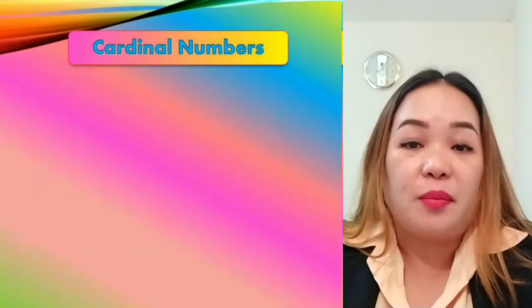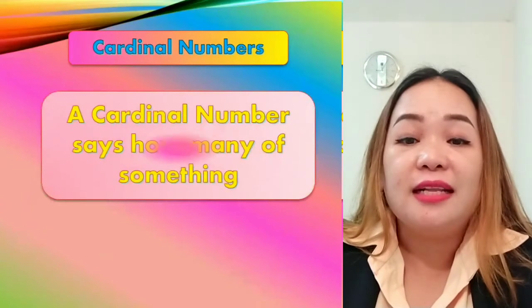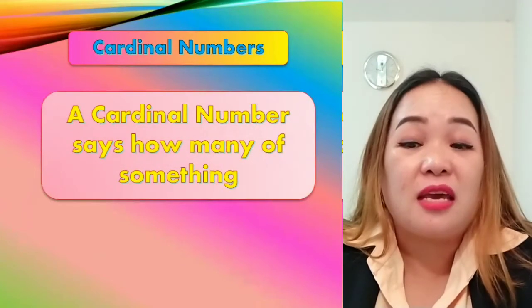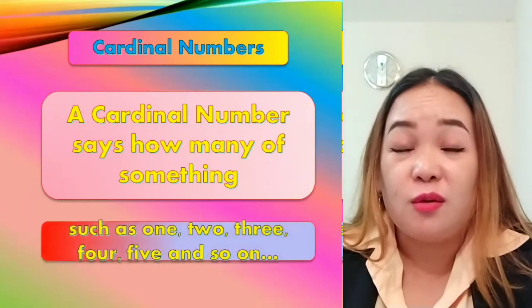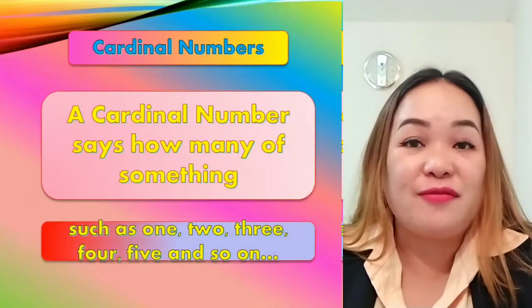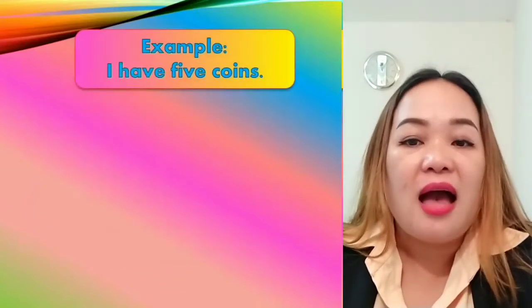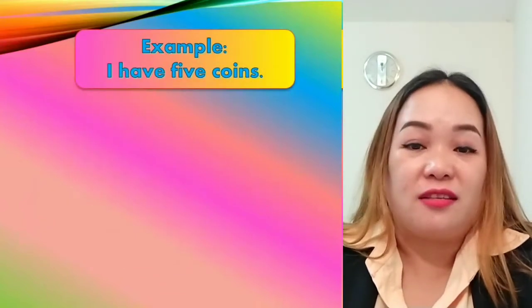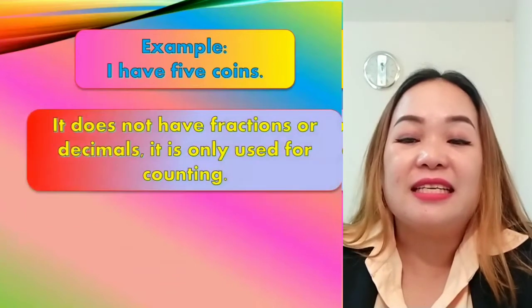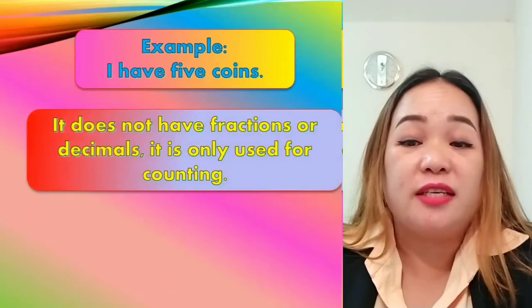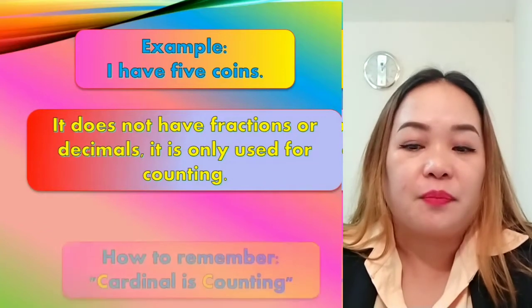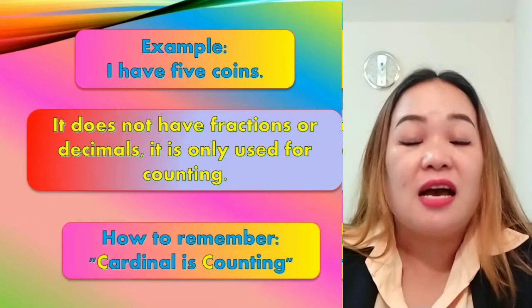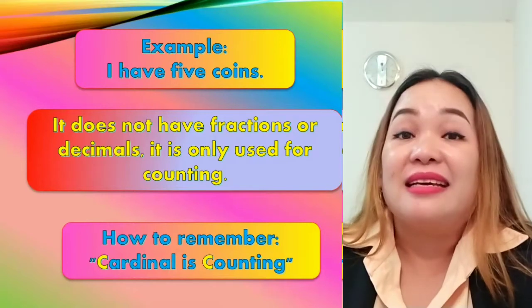Cardinal numbers. A cardinal number says how many of something, such as one, two, three, four, five, and so on. For example, I have five coins. It does not have fractions or decimals — it is only used for counting. So how to remember this? Cardinal is counting.